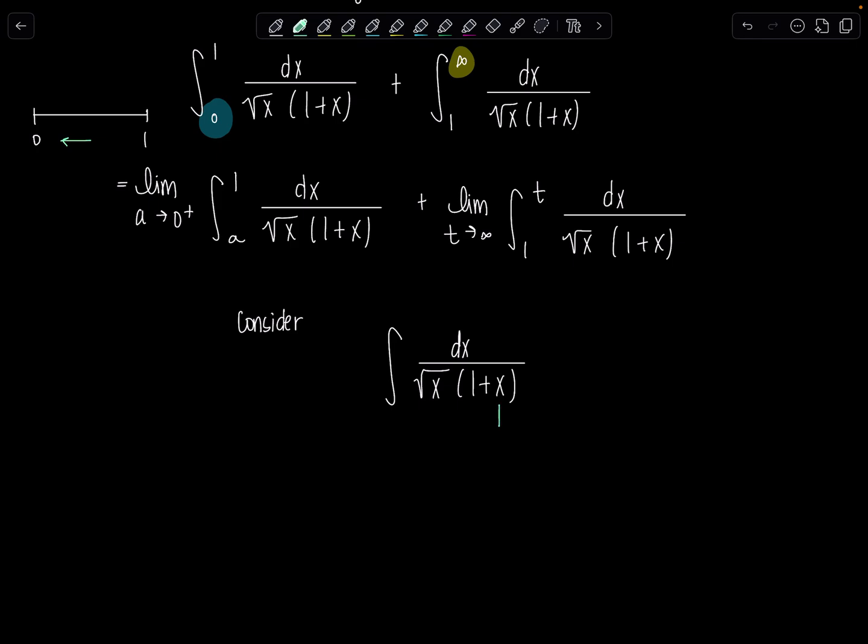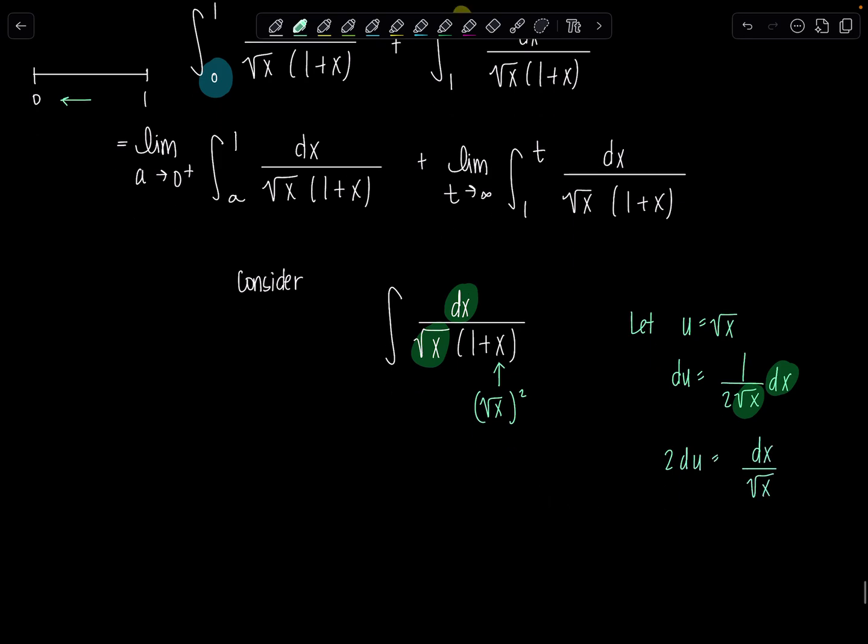And then hopefully you can kind of spot what to do. You guys have been doing so many integrals. X is rad x squared, right? So we're just going to come in with a U sub, let U equal rad x. Then du is one over two rad x dx. Do I have that kind of? I have dx over rad x. So two du is dx over rad x. Beautiful.